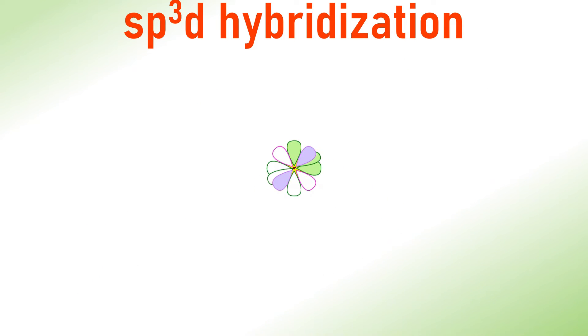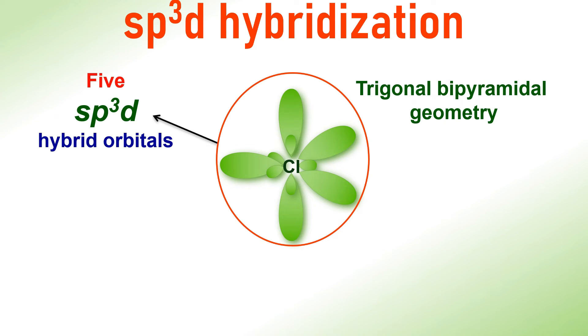This results in the formation of five sp3d hybrid orbitals arranged in a trigonal bipyramidal geometry. And each of these sp3d hybrid orbitals comprises 20% s character, 60% p character and 20% d character.